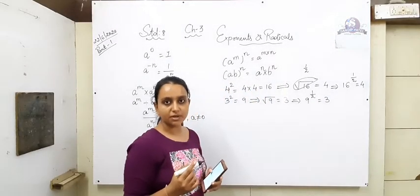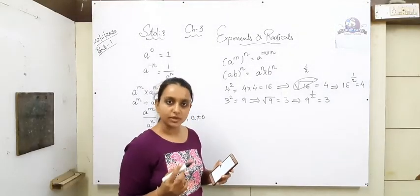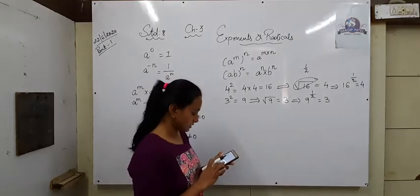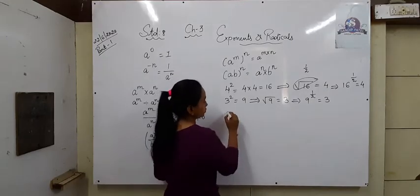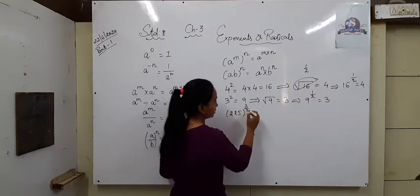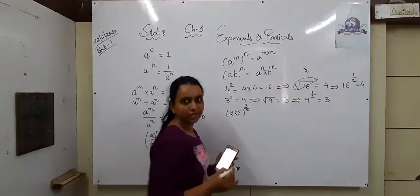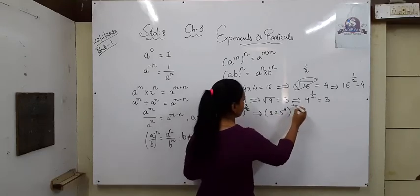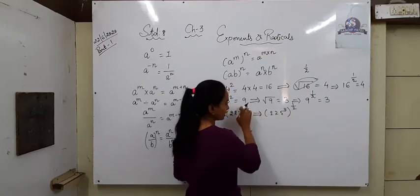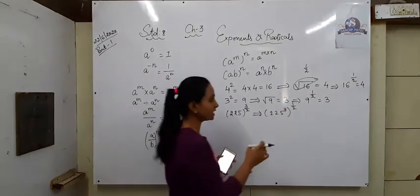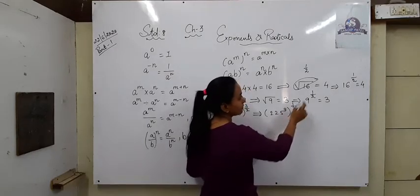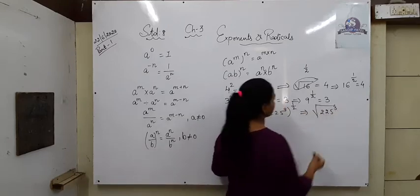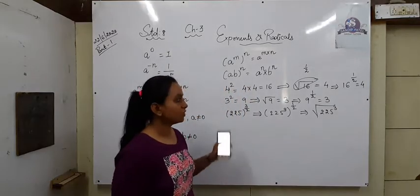Suppose two hundred and twenty-five raised to three upon two. Here the power is not one upon two but three upon two. The simple meaning is: two hundred and twenty-five raised to three, raised to one upon two. The three goes inside because three is in the numerator. So three I can take inside and one upon two stays outside. One upon two power makes a square root. So this can be written as the square root of two hundred and twenty-five cubed.